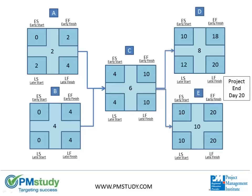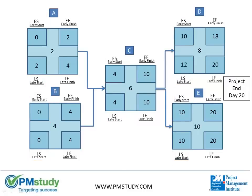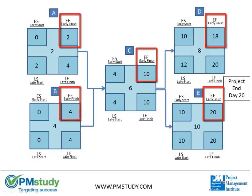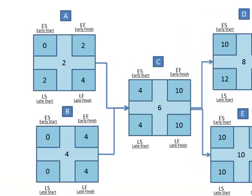To calculate float for each task, we subtract the early start from the late start or the early finish from the late finish. Either of these two variances will determine the float and will be the same number. Let's pick the late start minus the early start, or two minus zero.